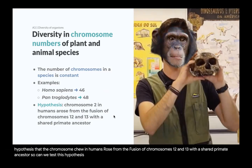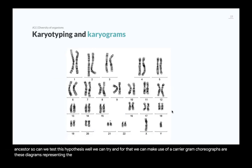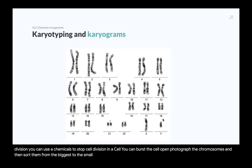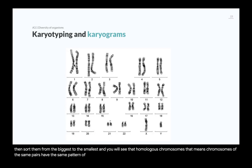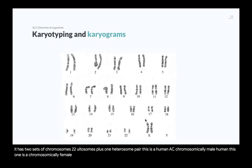We can try using a karyogram. Karyograms are diagrams representing chromosomes, obtained by photographing them during cell division. You use chemicals to stop cell division, burst the cell open, photograph the chromosomes, and sort them from biggest to smallest. Homologous chromosomes — same pairs — have the same pattern of bands. Here we have a diploid organism with 22 autosomes plus one heterosome pair. A chromosomically male human has XY; a chromosomically female human has XX and no Y.